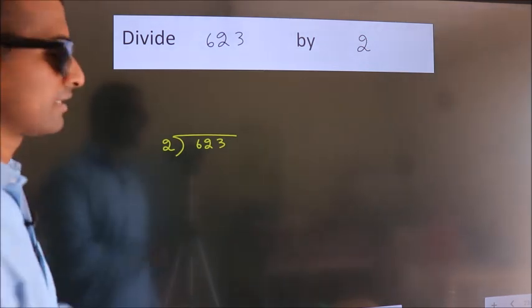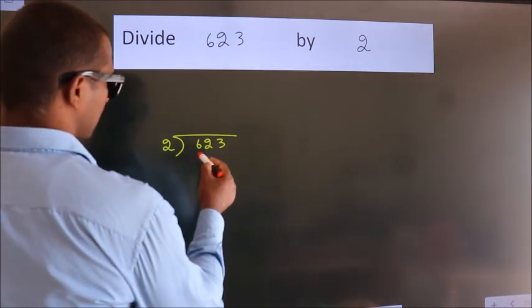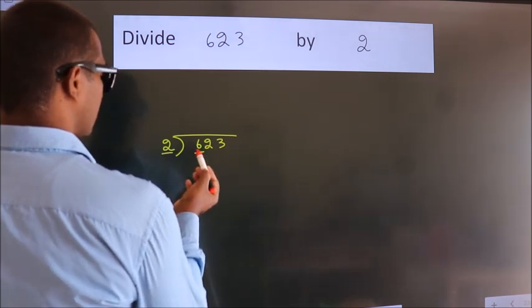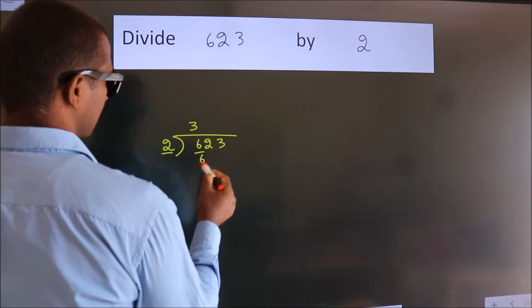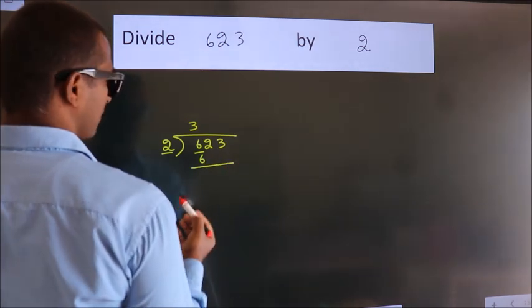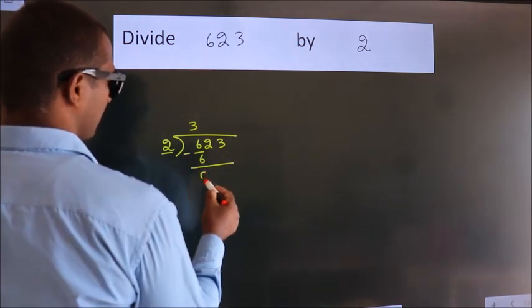Here we have 6 and 2. When do we get 6? In the 2 times table, 2 times 3 is 6. Now we subtract and get 0.